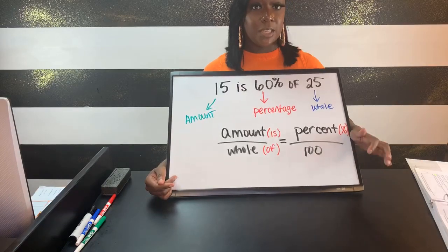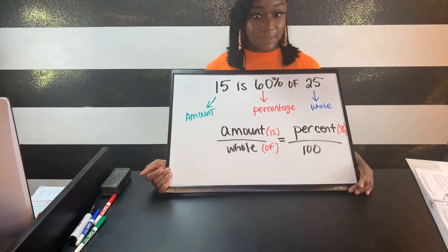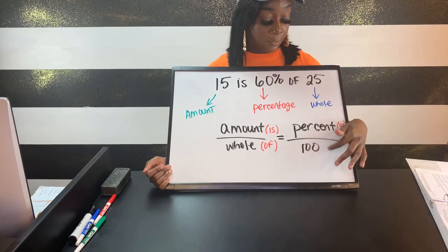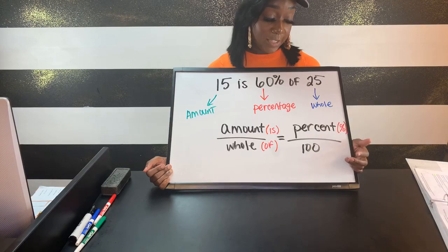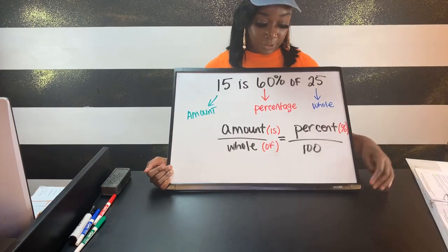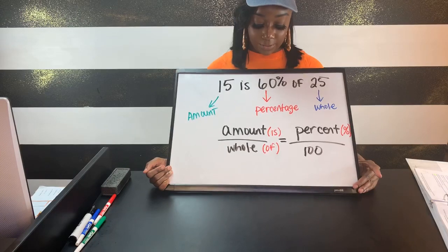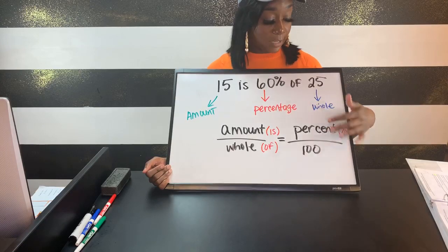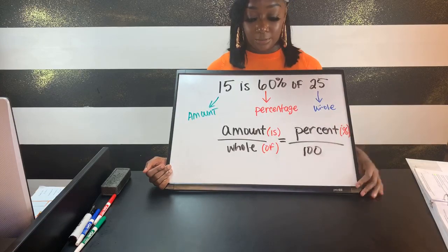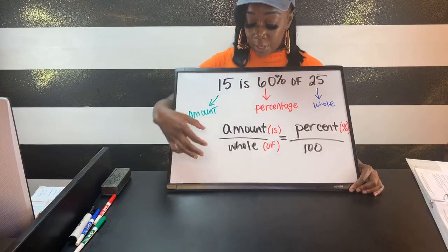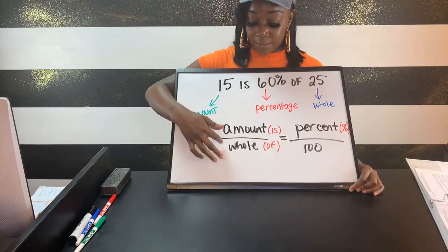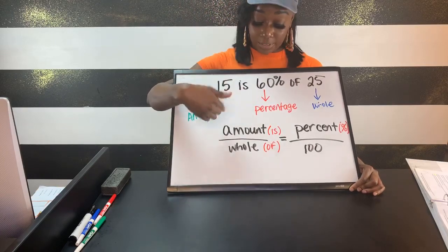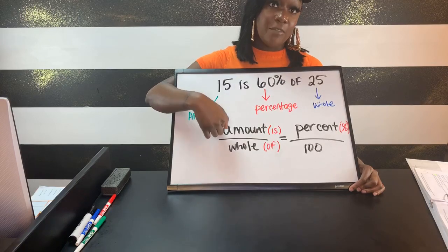First, the 100 is a given — it's going to be in every single problem. People sometimes ask when to use it, but it's always there. The reason 100 is used is because it automatically converts your percent to a fraction, so you don't have to do it yourself. Any time you see a percentage in a problem, it automatically goes over 100. The whole is always going to be the total of what we're dealing with.